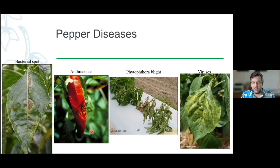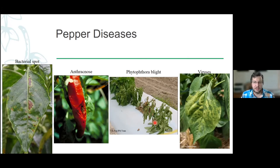Anthracnose is a fungal disease that tends to occur when it gets too wet or there are other stresses on it. Phytophthora blight is similar to late blight but a different species — it's attacking the roots, so your plants are going to look wilted no matter how much water you give them. You don't see this very often, but if you have well-drained soils it's less of an issue. It's more of an issue if the ground is too soggy.